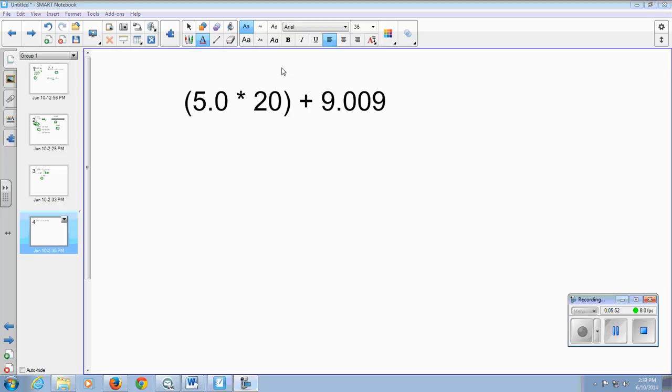And the last example I'm going to do is shown here. We're going to take 5.0 times 20 plus 9.009. So 5.0 times 20 gives us an answer of 100.